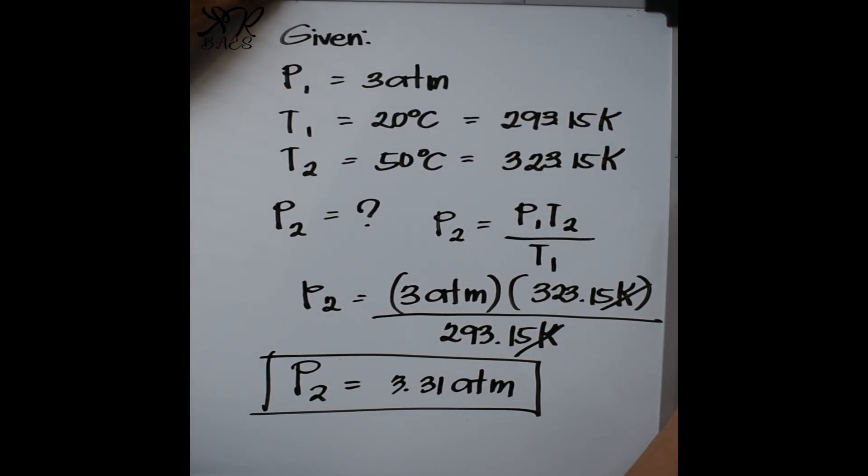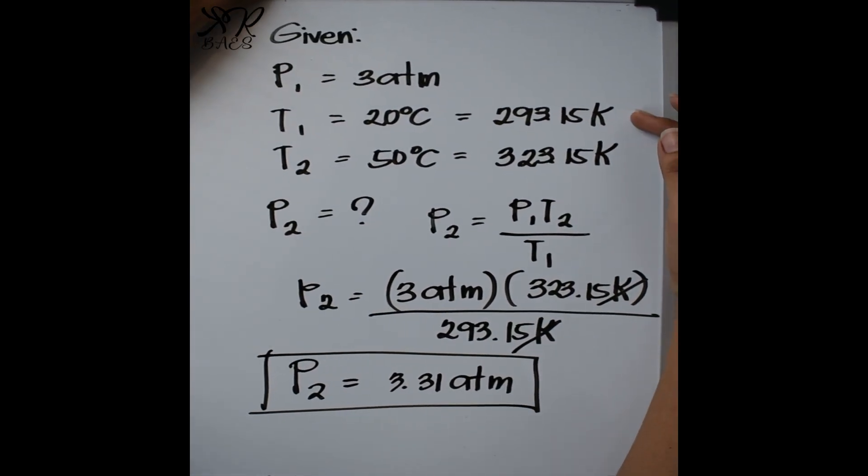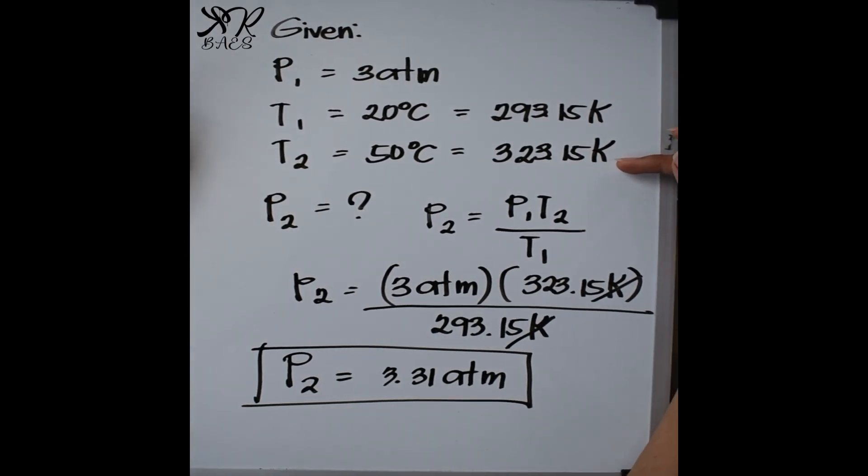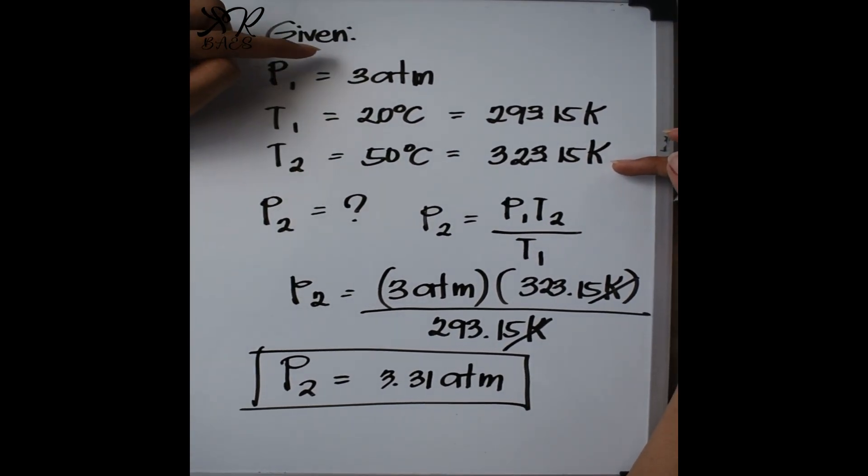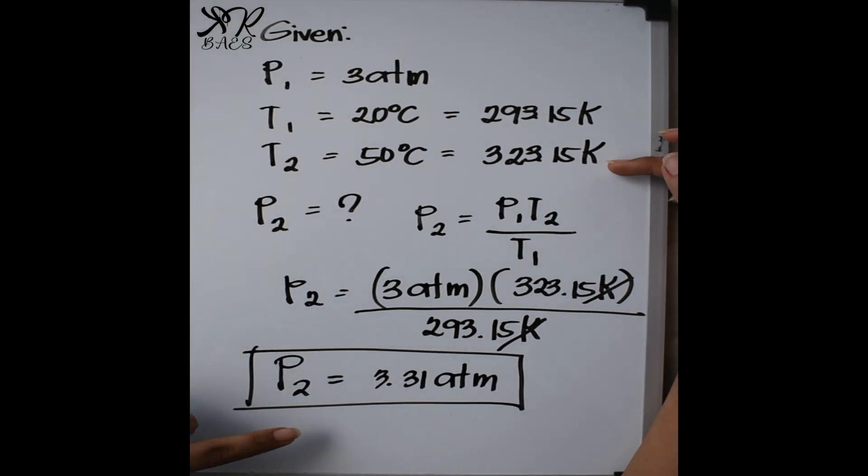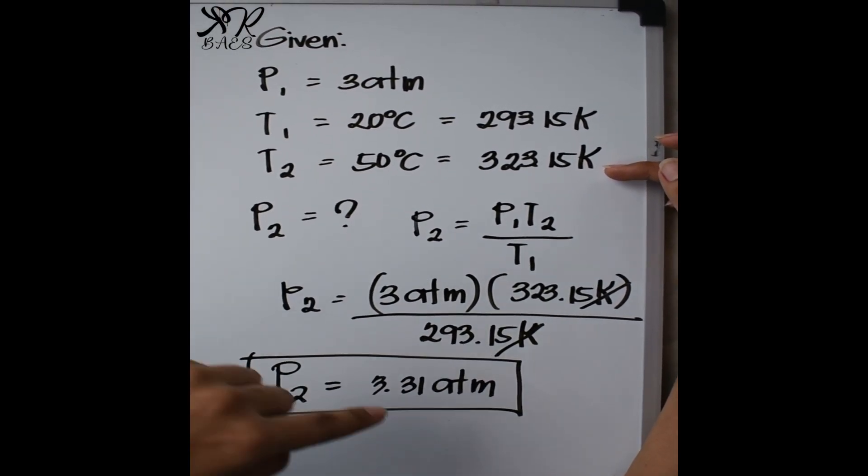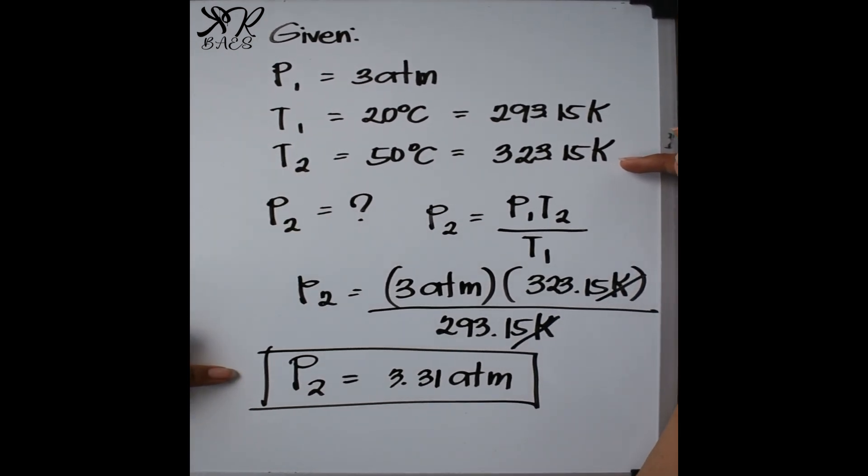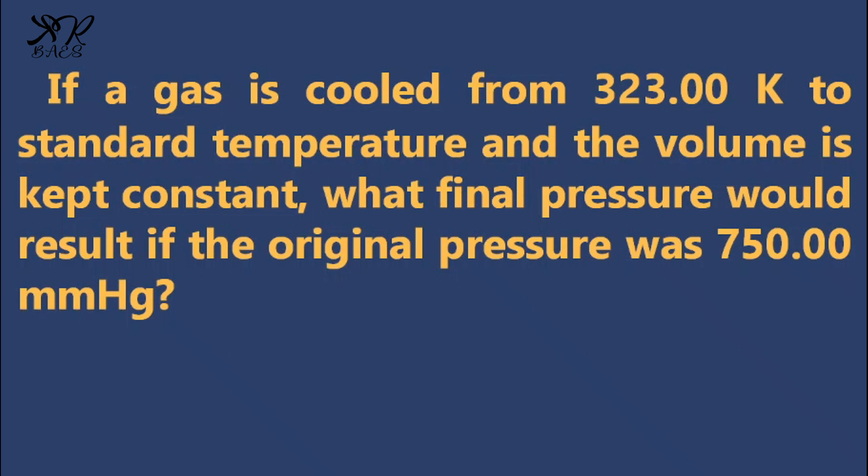As you can see, when the temperature was increased to 50 degrees Celsius, the pressure also increased. So, we have here 3 atmosphere and then the final pressure is 3.31 atmosphere. So, as the temperature increases, the pressure also increases. Sample problem number 2.